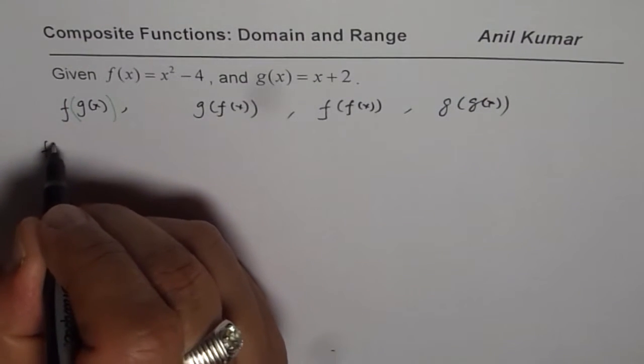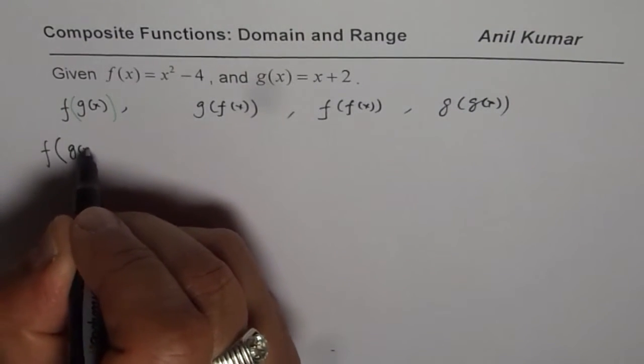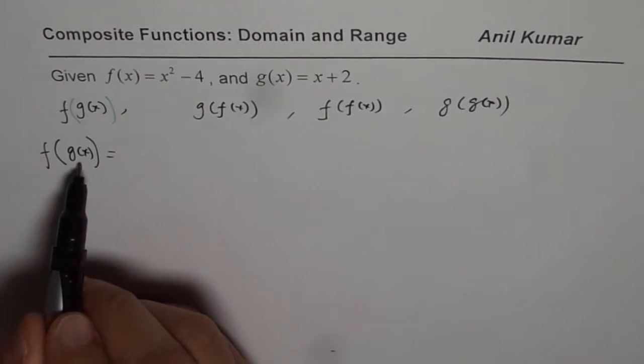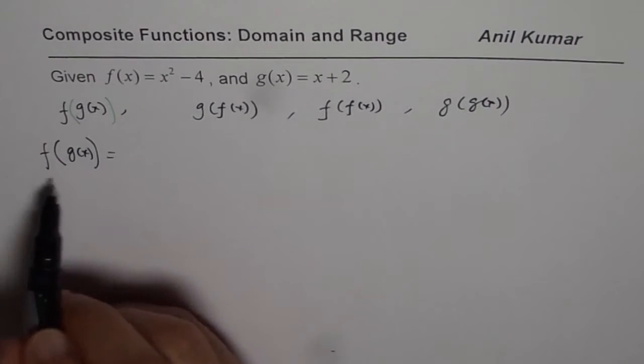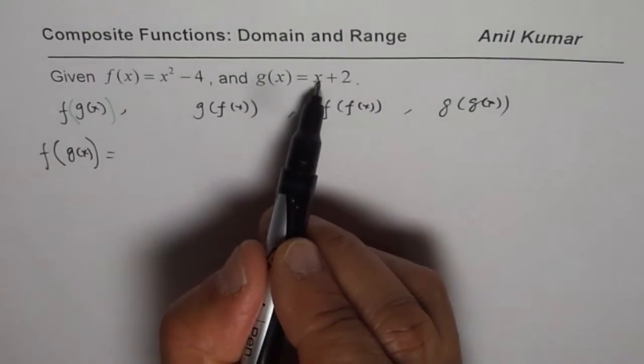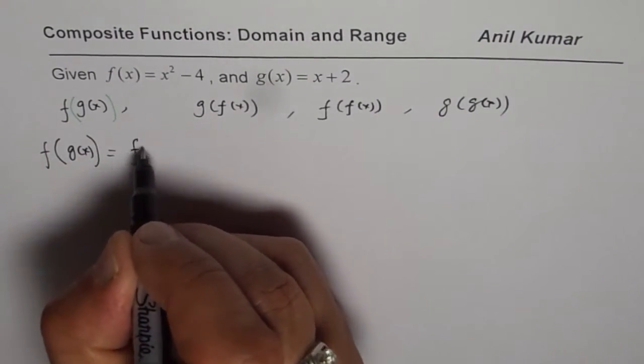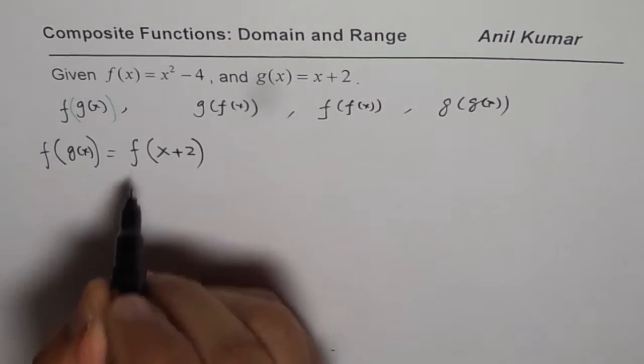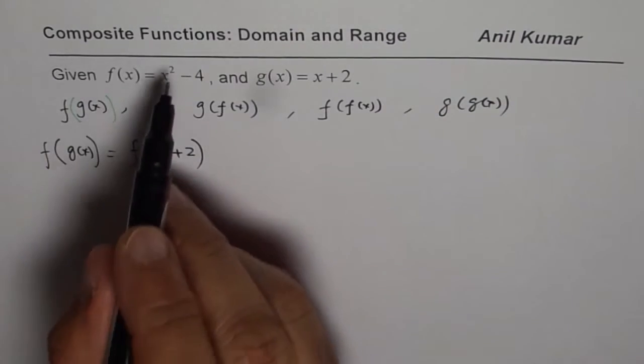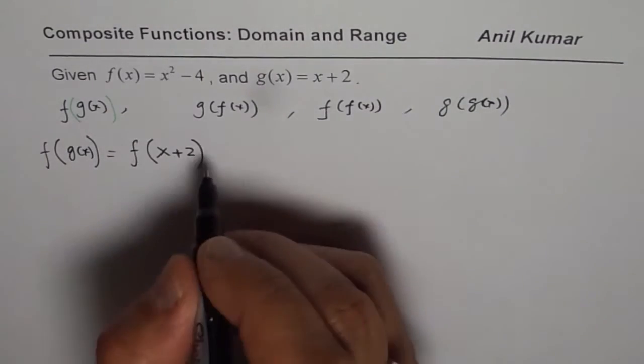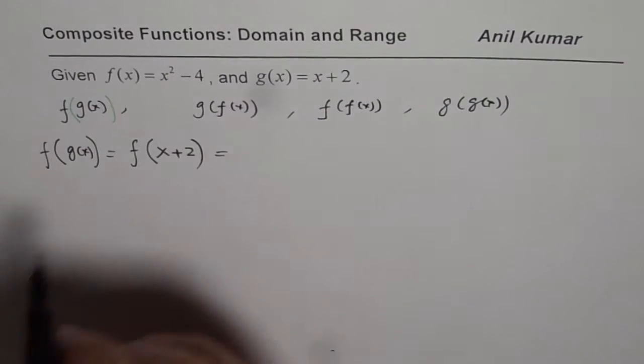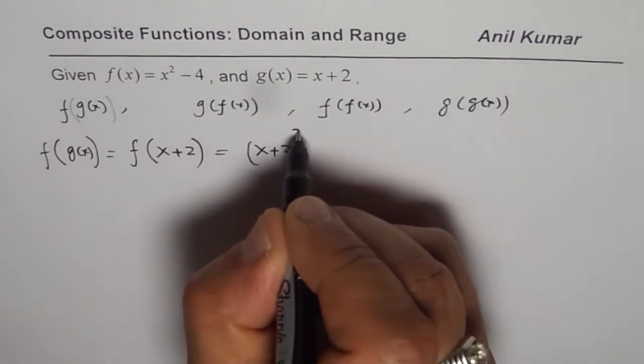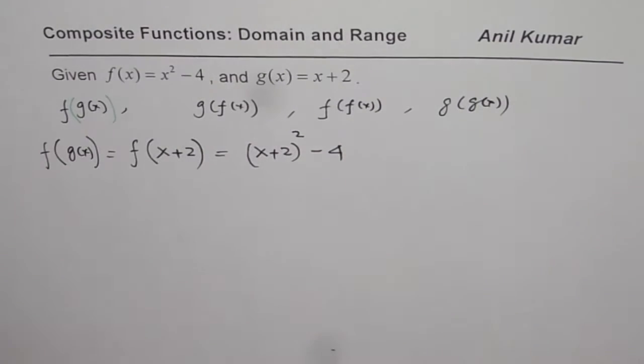When we say f of g of x it really means we'll start with the inside function that becomes the domain of this whole function. So g of x is x plus 2. We can write this as f of x plus 2. Now f of x is given to us as x squared minus 4, so x will be replaced by x plus 2. We get x plus 2 whole square minus 4.